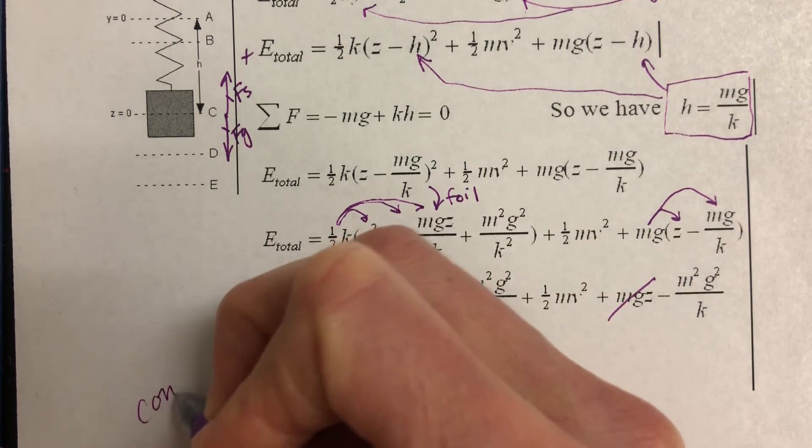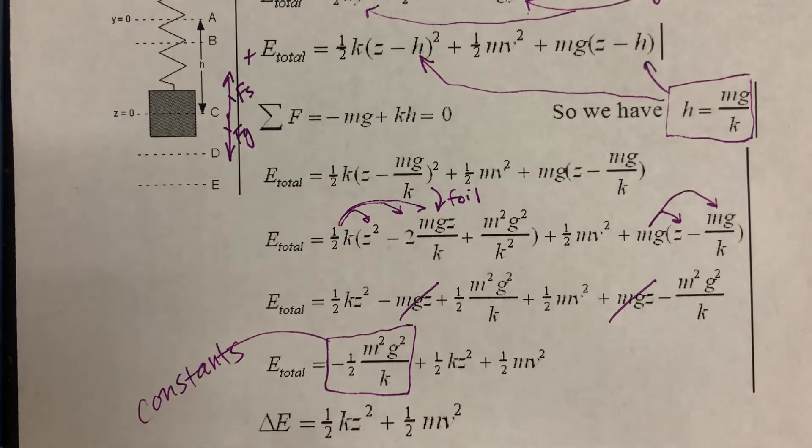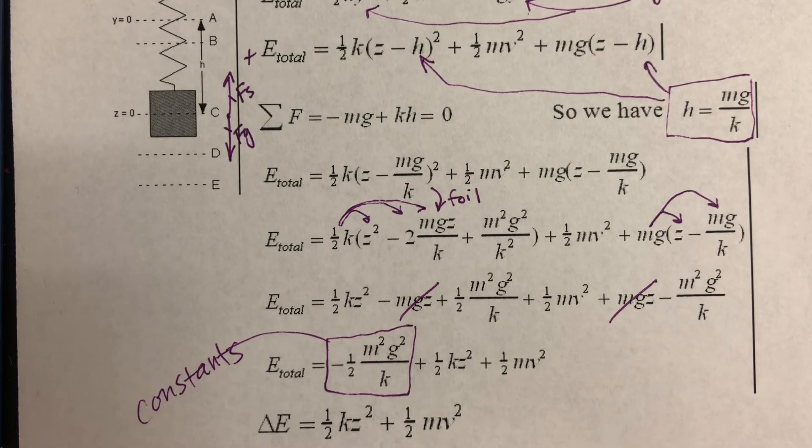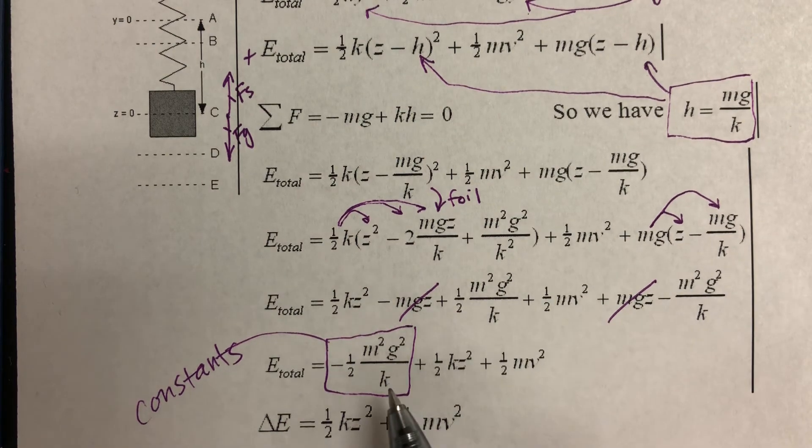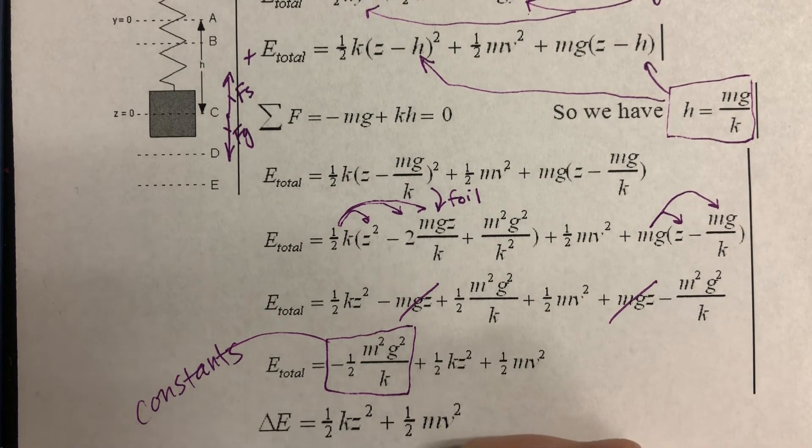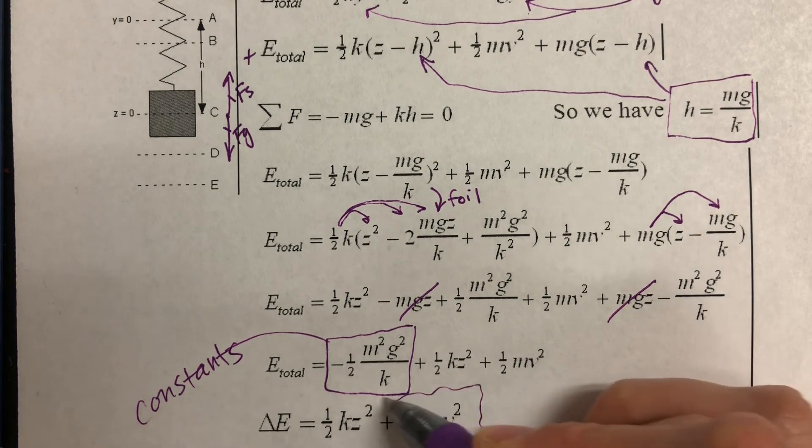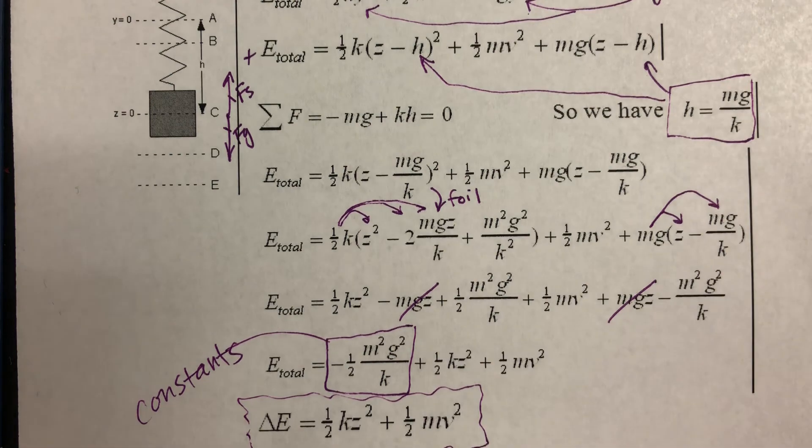And since we really only care about the changes in energy, the constants aren't really going to matter. So when we write our change in energy equation, we can just drop that out. Because it's going to be in the initial situation and the final situation. It's kind of like setting your gravitational potential energy, your zero reference line, as low as you can so that you don't have any gravitational potential energy that's the same in both situations. So it would just cancel. So that's going to go away. And we get this equation. Change in energy is equal to 1/2 kz squared plus 1/2 mv squared.